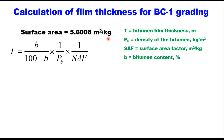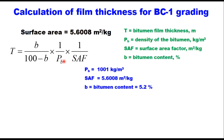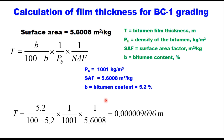The bitumen film thickness is given by the equation. Here, density of the bitumen ρ_b is taken as 1001 kg/m³, the surface area factor SAF is 5.6008 m²/kg, and bitumen content B is 5.2%, which is the minimum binder content per MRTH specifications for BC-1. Substituting these values gives T = 0.00009696 m, or 9.69 microns — that is the average film thickness on the different particles in the mixture.